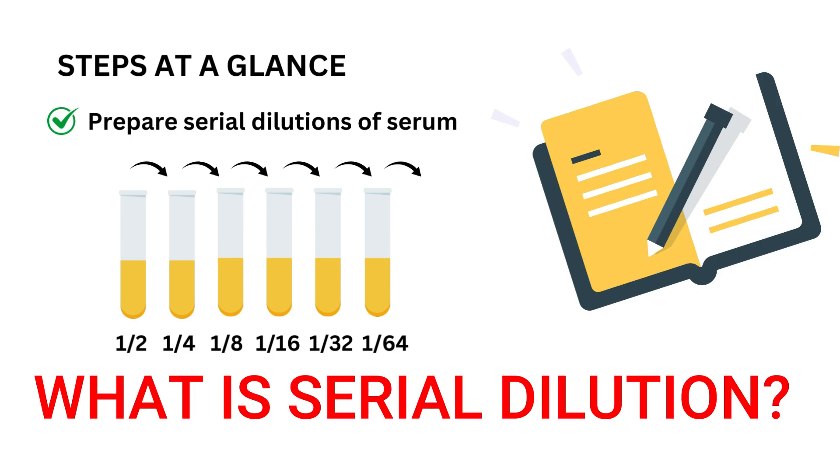Serial dilution, meaning we have to dilute the sample by using isotonic saline in a ratio of 1 is to 2, 1 is to 4, 1 is to 8, 1 is to 16, 1 is to 32, 1 is to 64, and so on.